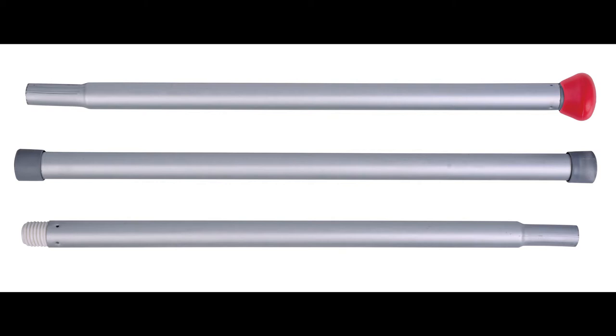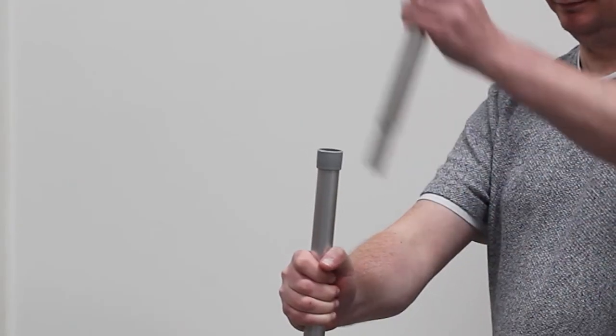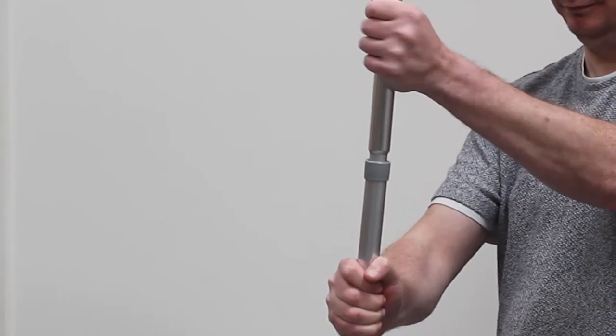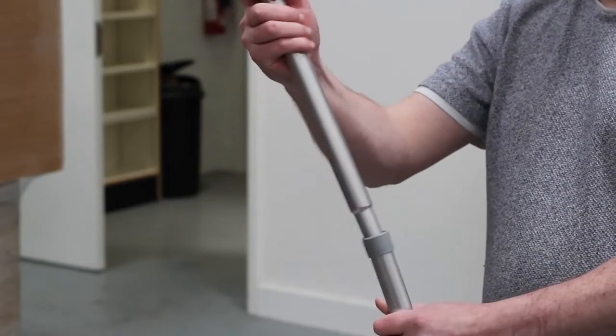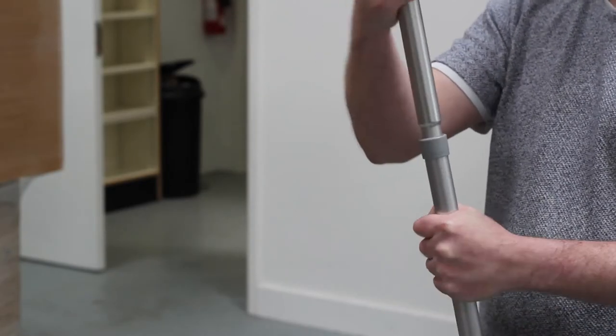These parts slot together like so. You might find it useful to tap the handle on the floor to close up the joint and make it nice and tight.